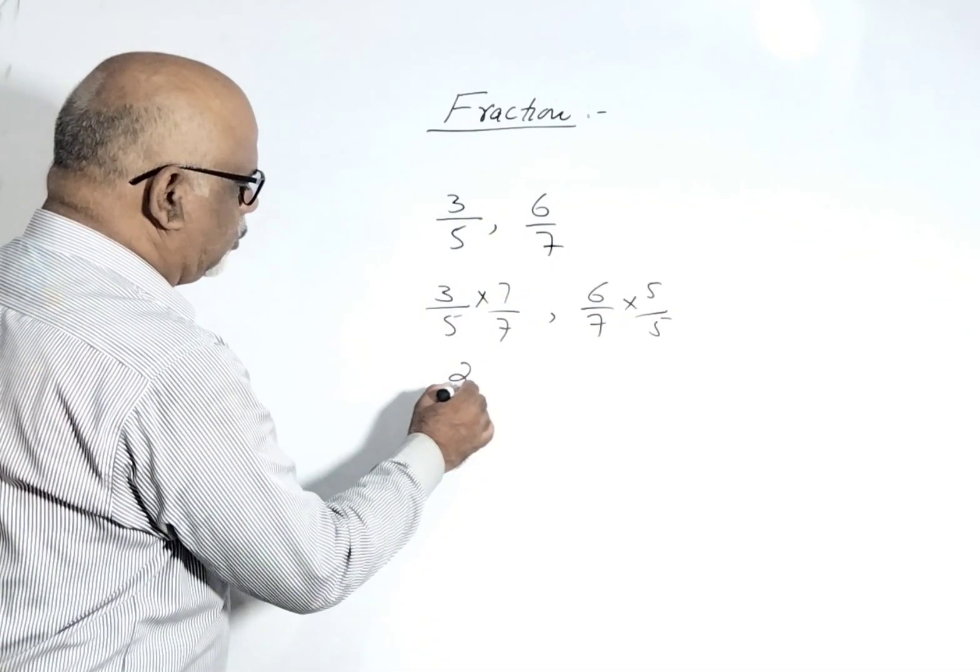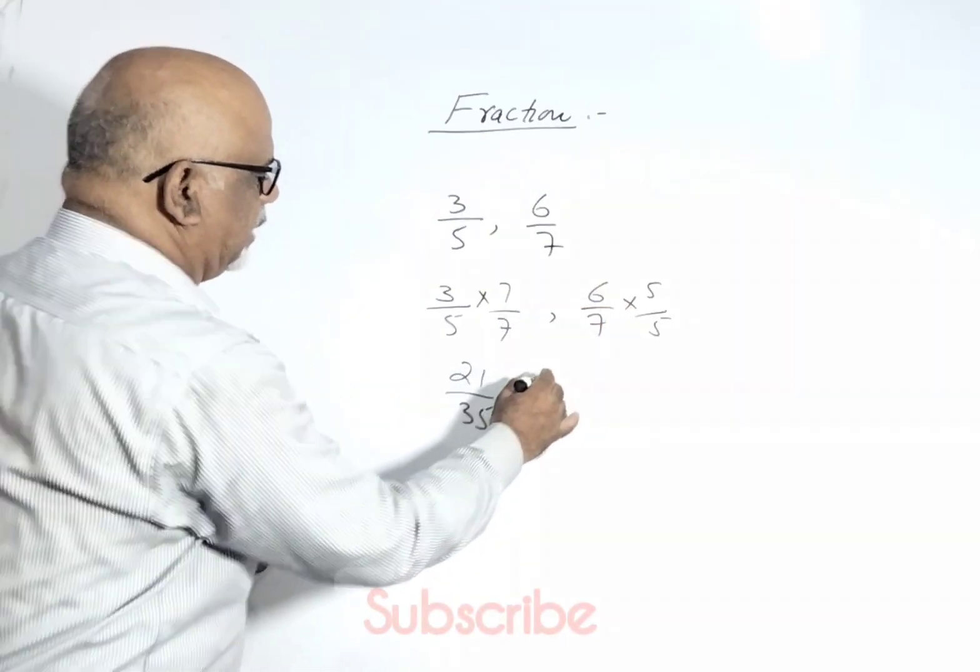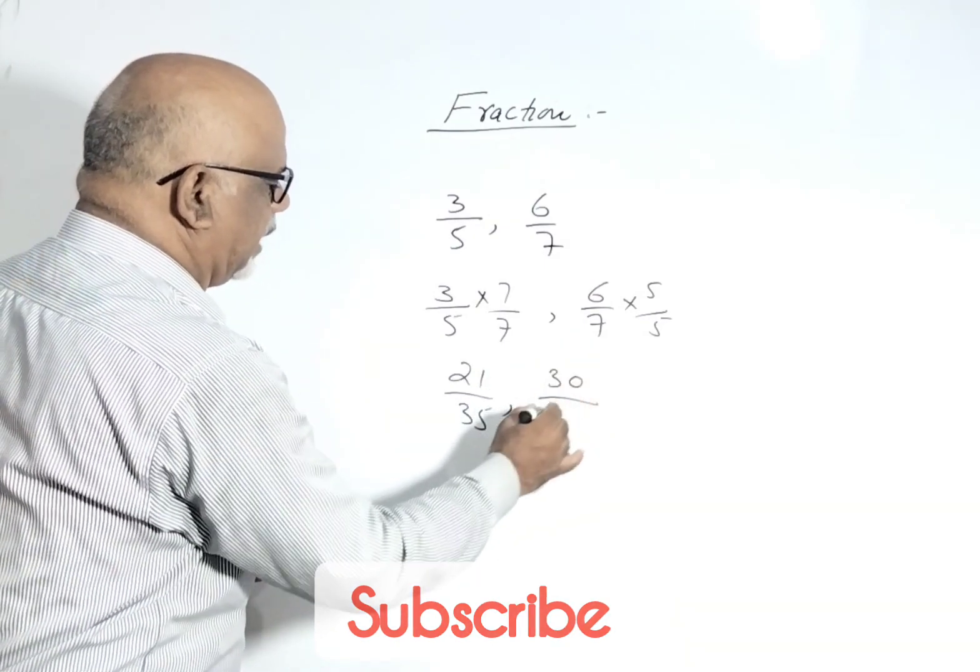So this is 7, 3's are 21, 7, 5's are 35, 6, 5's are 30 and 7, 5's are 35.